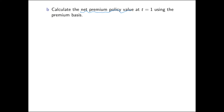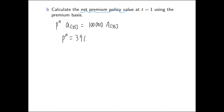In part B, we want the net premium policy value. For the net premium, we ignore the expenses. First, let's figure out the net premium. We establish the equality that the expected present value of the premium, which is Pn times the annuity, is equivalent to the benefit 100,000 times the life insurance. Based on this, we can solve that Pn is $391.22.